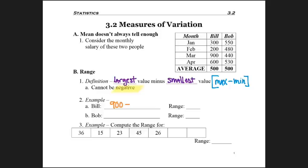We need to subtract his smallest salary, $200. And we get a range of $700. Bill's salary can range from $700 off one month to the next, or from his highest month to his lowest month.